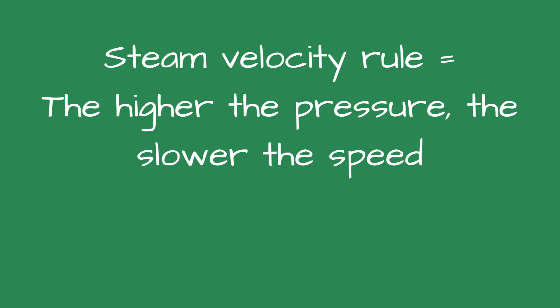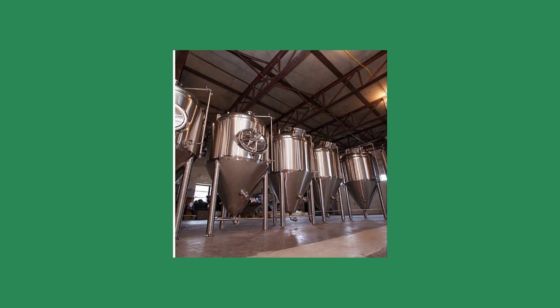Sizing the boiler. Steam systems are sized according to the connected load. To size a steam space heating boiler, all heat emitters should be totaled, and about 10% to 20% is added to cover the piping. When sizing the steam boiler for a brewery, it becomes more complicated. An undersized boiler will not meet the brewer's requirements. An oversized boiler can cause short cycling, shortening the boiler life, increasing fuel consumption, and providing fluctuating steam pressure to the system.